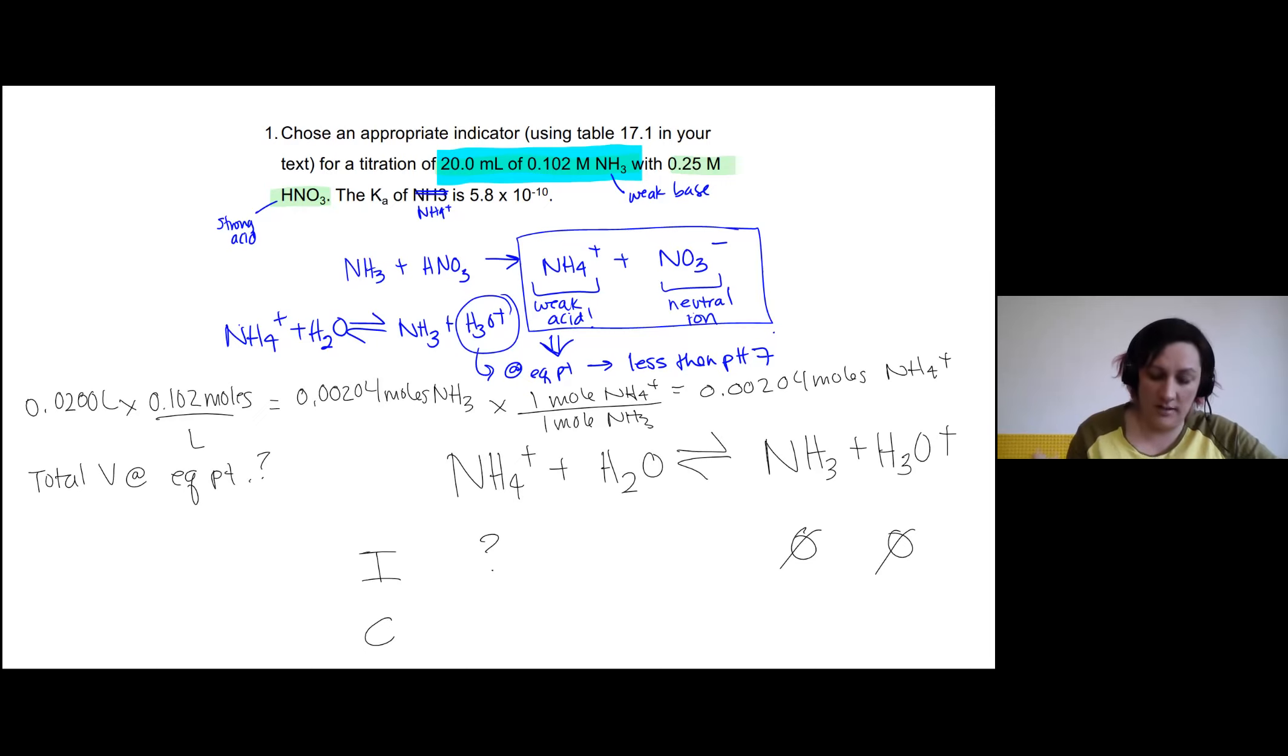So we have its concentration. So let's take that 0.00204 moles of HNO3 because it'll be the same number of moles, it's a one-to-one ratio. And we'll multiply that by its 0.25, divide by, okay.